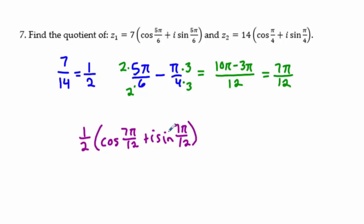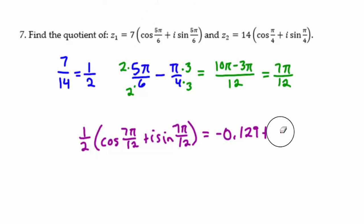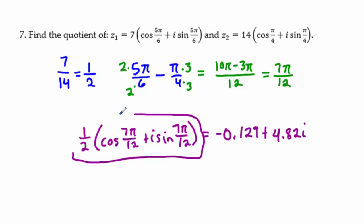If we want standard complex form for problem 7, we'd distribute 1/2 and use our calculator in radian mode to find cosine and sine of 7π/12, getting approximately −0.129 + 0.482i. But normally we leave it in trig form since 7π/12 doesn't give an exact value we can compute easily.